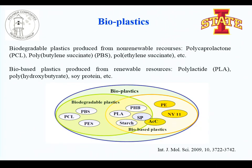Bioplastic material includes all biobased plastics and also all biodegradable polymers, even those coming from petroleum-based products. For example, polyepsilon caprolactone, polybutylene succinate, and polyethylene succinate — they are biodegradable but originally petroleum-based products — so they belong to the bioplastic material category.